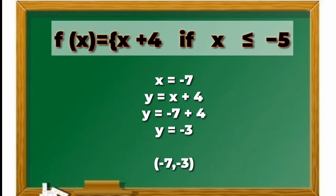The third possible value of x is negative 7. y equals x plus 4, so y equals negative 7 plus 4. We substitute x to negative 7. y equals negative 3. So our ordered pair is negative 7, which is the domain, and negative 3, which is the range. Remember that you can make as many values of x as possible, but in our equation we only give at least 3 possible values of x.